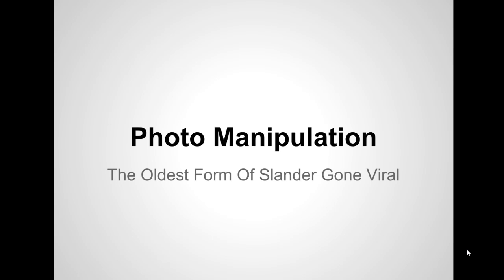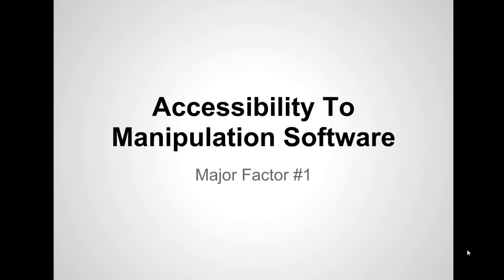There are two major factors that make online photo manipulation so much more powerful and so much more detrimental than ever before. The first major factor is accessibility to manipulation software. For the longest time, only highly trained photographers had access to the high-tech photo manipulation tools required to fudge a photo and make it believable.